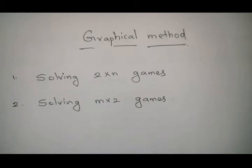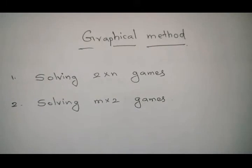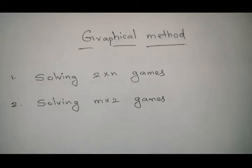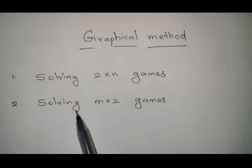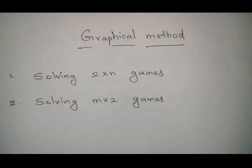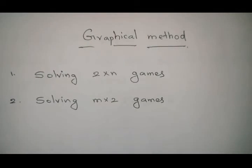Hi everyone. In previous sessions we solved game theory problems with saddle point and without saddle point using the algebraic method and the combination of algebraic method and dominance principle. In today's session I want to discuss the graphical method of solving game theory problems. With graphical method we can solve two types: games of 2×n order payoff matrix and games of m×2 order payoff matrix.